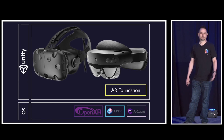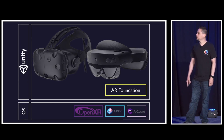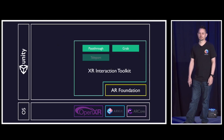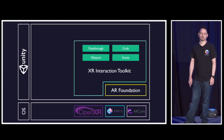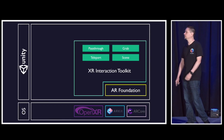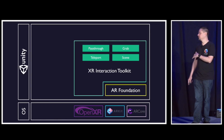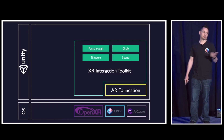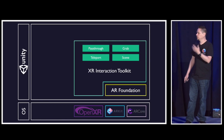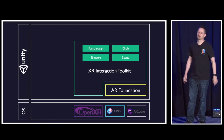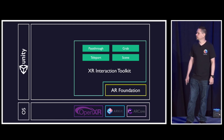Unity said that now that we've got AR glasses, this looks like something we've done before. So they created the XR Interaction Toolkit. This library gives you things like teleport, grab, video pass-through, and scene understanding — all these kinds of building blocks for building mixed-reality applications.